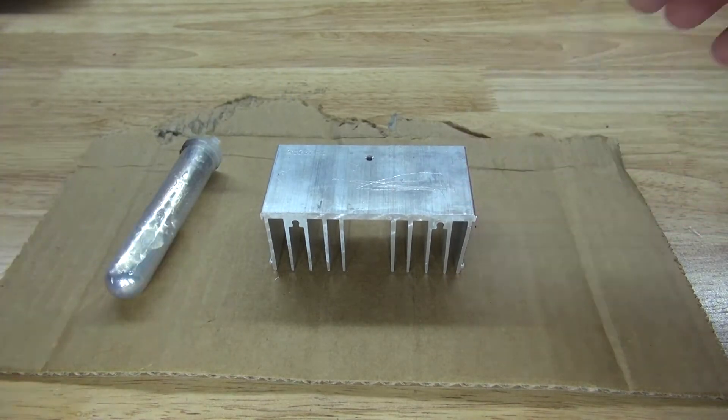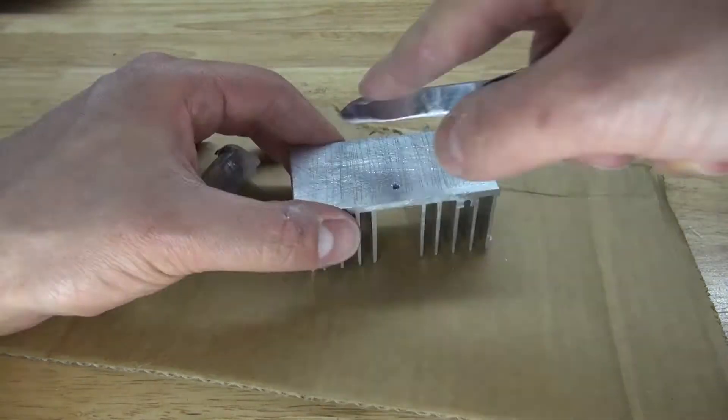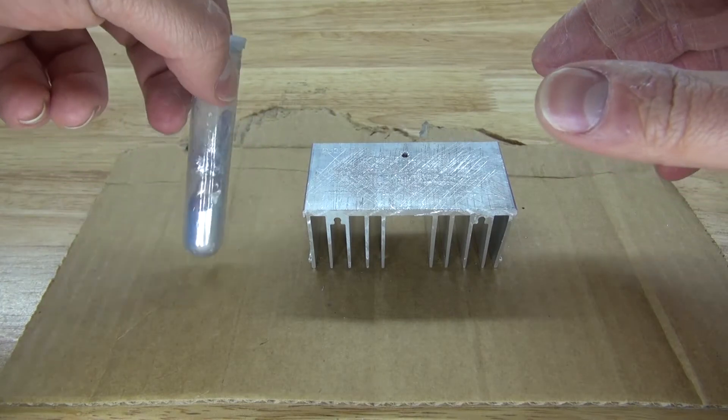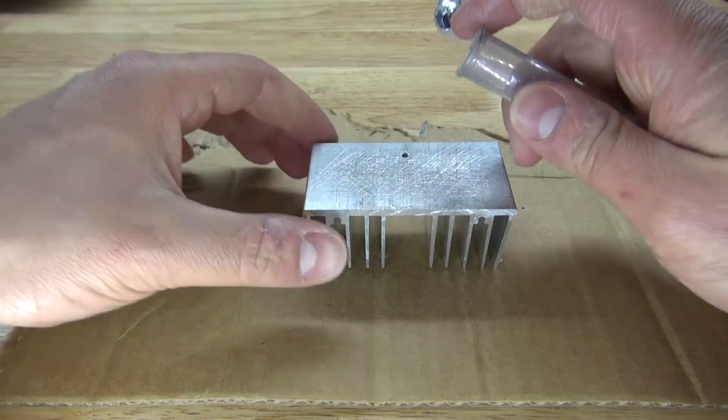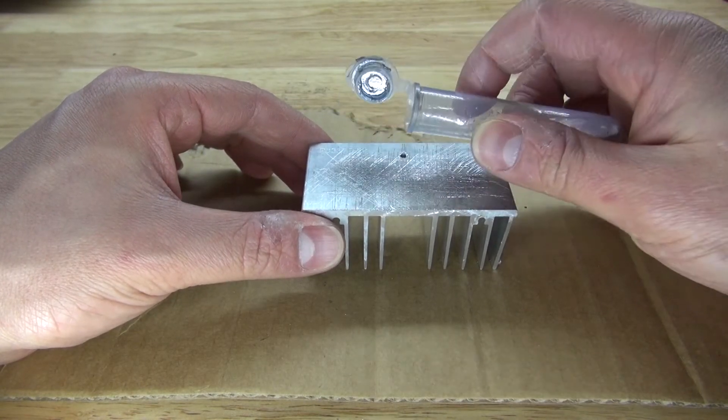So what I'm going to do is take this gallium and pour it on top of this aluminum. But before I do that, I need to remove the oxide layer by using my pocket knife and scratch off the surface, just like this. And now let's go ahead and pour it on top, just like this.